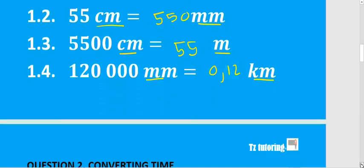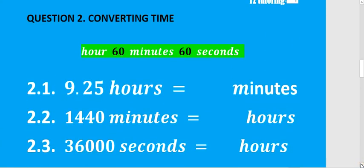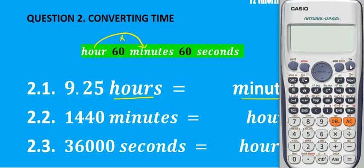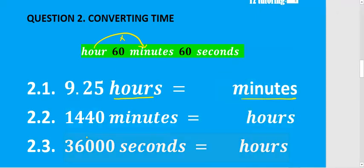Question 2: we're converting time. The time converter: one hour has 60 minutes and each minute has 60 seconds. We apply the same concept — forward you multiply, backwards you divide. For 2.1 we want to go from hours to minutes, so we multiply. 9,25 multiplied by 60 gives us 555 minutes.